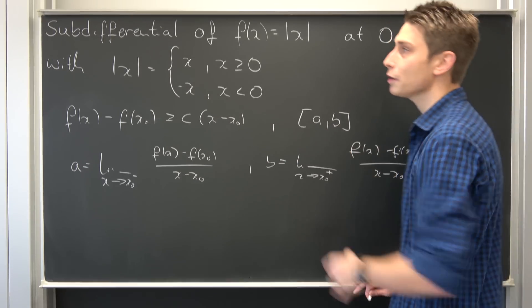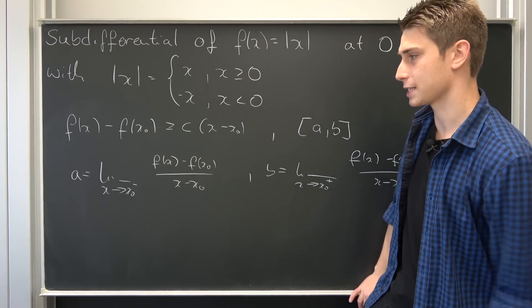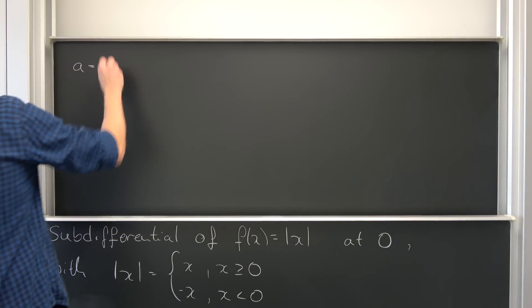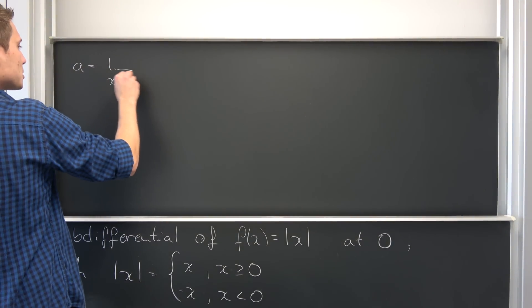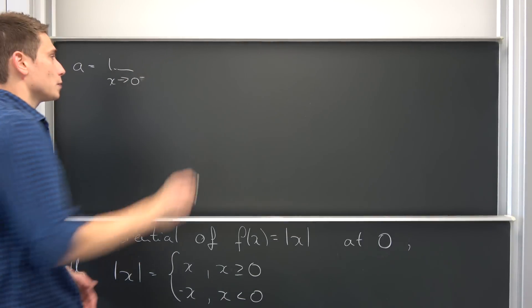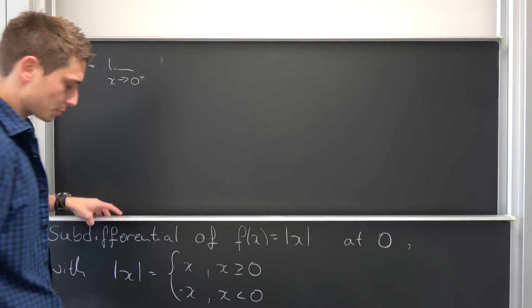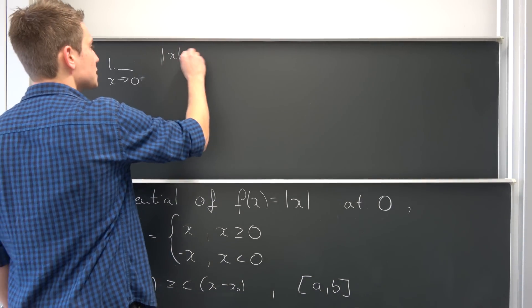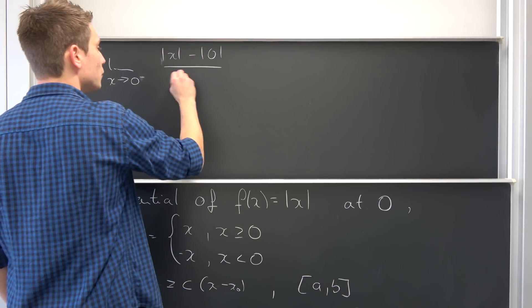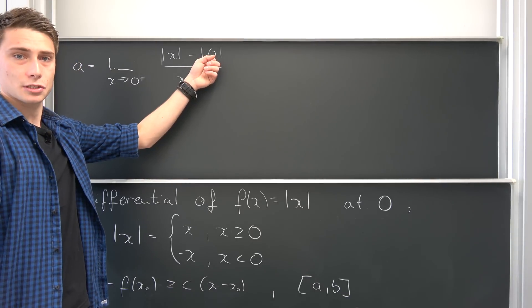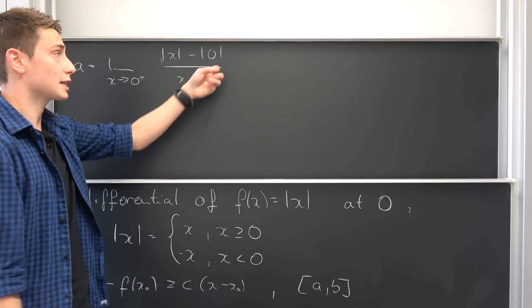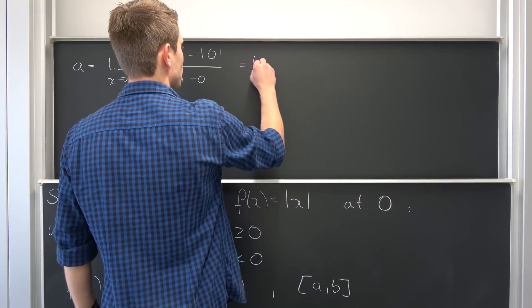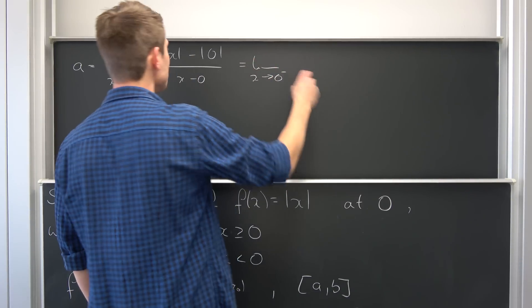Let's get started. For our a, we have the limit as x approaches zero from the left of |x| - |0| over x - 0. This is just positive zero, and we end up with the limit as x approaches zero from the left of |x| / x.